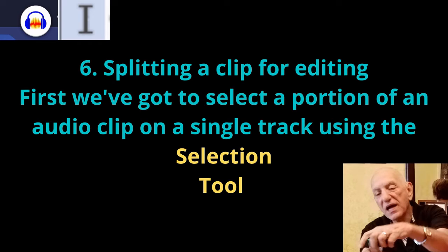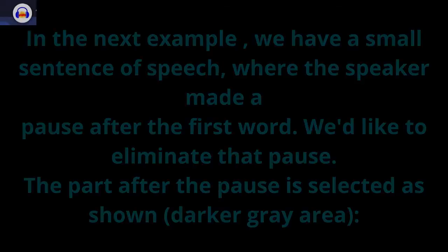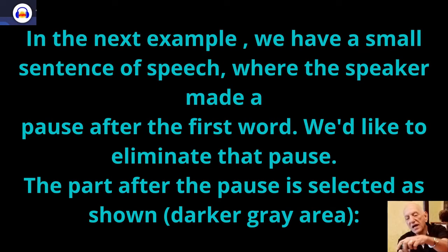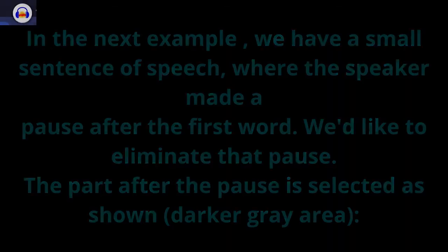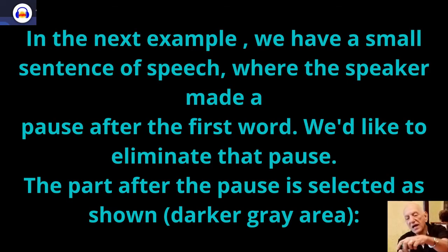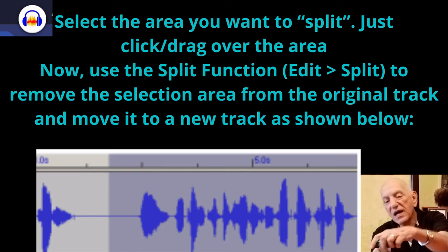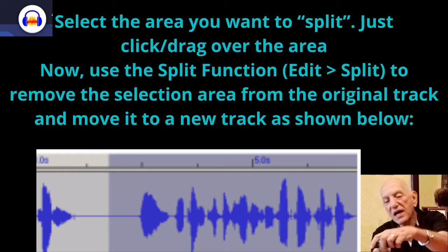Tip 6: Splitting a clip for editing. First, select a portion of an audio clip on a single track using the selection tool. In the next example, we have a short sentence where the speaker made a pause after the first word. We'd like to eliminate that pause. Select the area after the pause, then use the split function (Edit > Split) to remove the selection from the original track and move it to a new track.